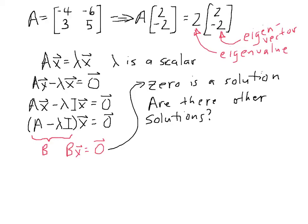Well, what we know from our previous study is that if B is invertible, that 0 will be the only solution. So what we want, if we want additional solutions besides 0, is we want B to not be invertible.